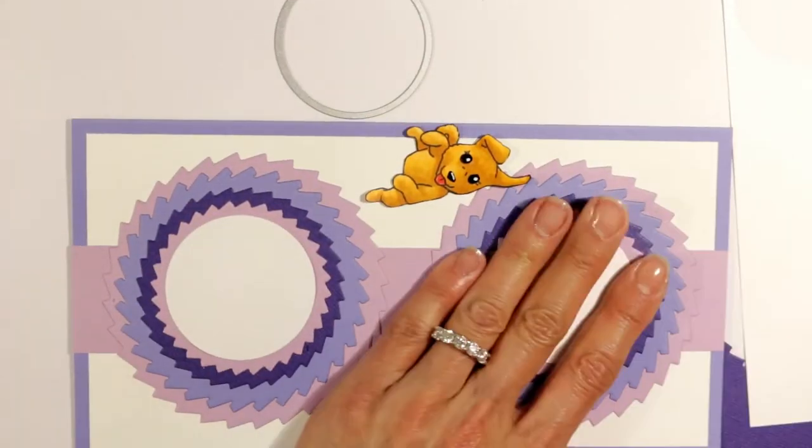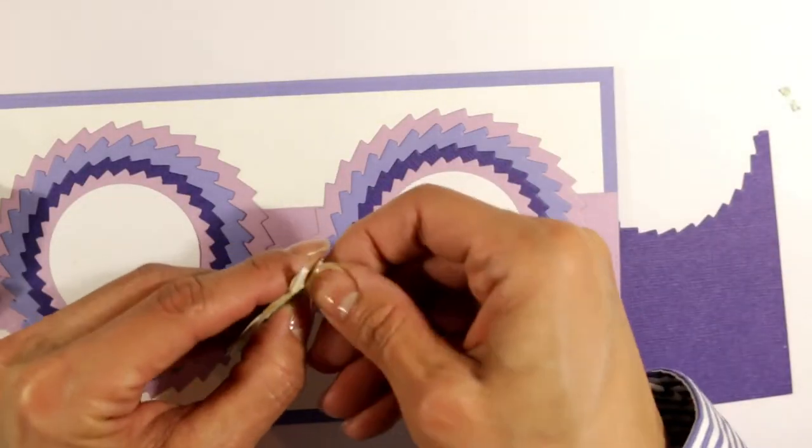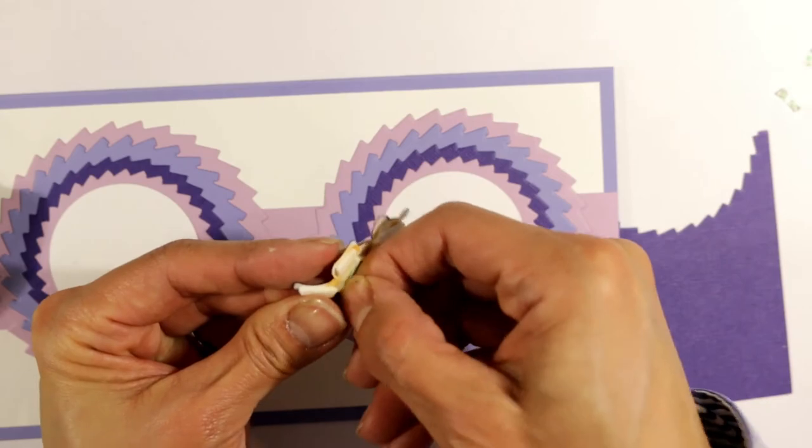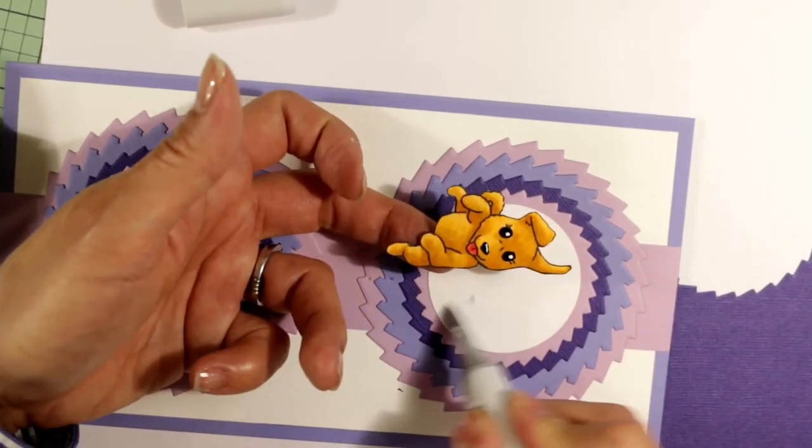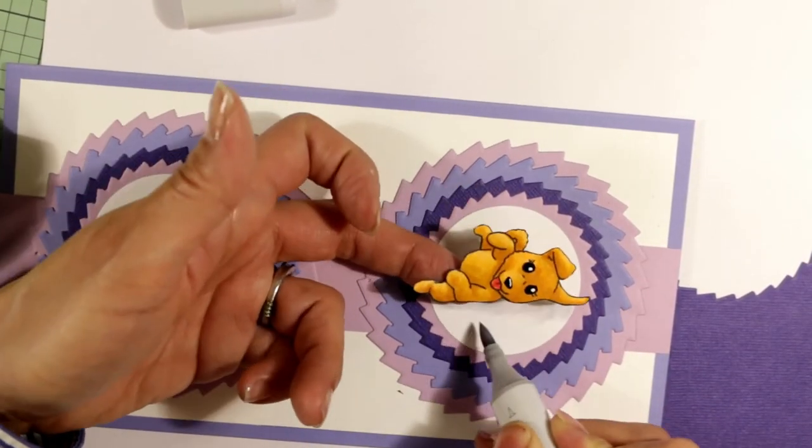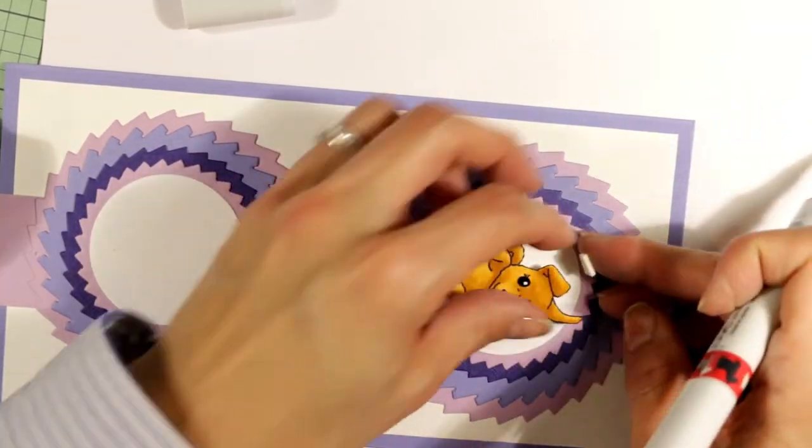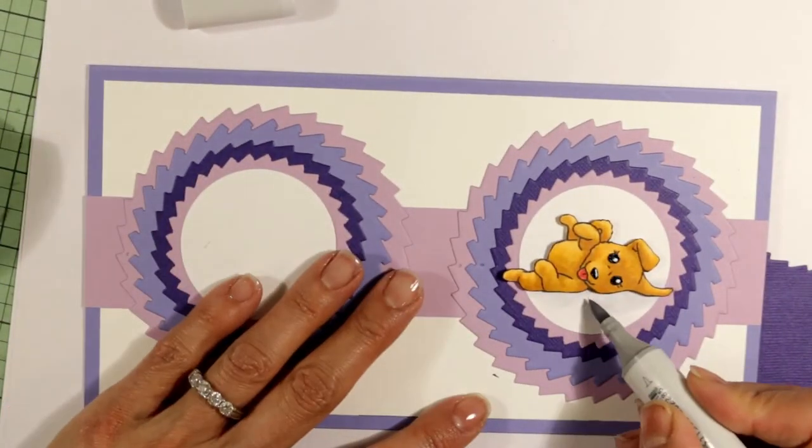I decided that the puppies would pop more if I added a white circle to the center of these spiral circles. I wanted to add a little dimensionality so I'm using double-sided foam adhesive behind the puppies. I decided I wanted a little bit of a ground for the puppy to lay on so it doesn't look like it's just floating, so I'm using a C1 Copic marker to add a little bit of shadow there as if he's laying down on the ground.